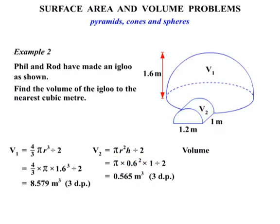Alright, our total volume now. There's our V1 and V2 added together, so V1, 8.579, add to that our V2, which is 0.565. So 8.579 plus 0.565 gives us 9.144.